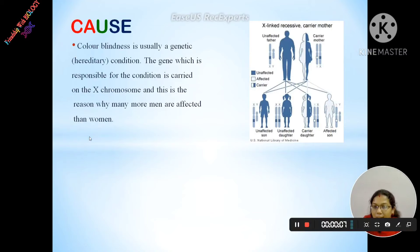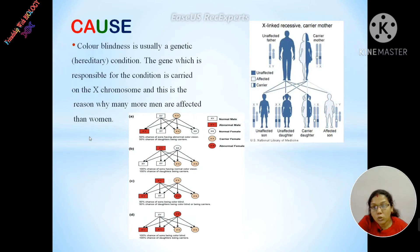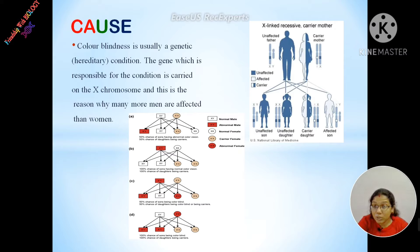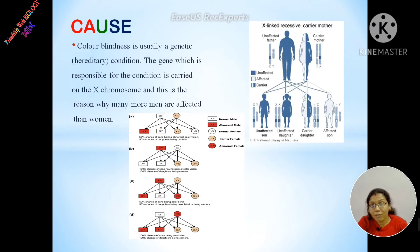What are the causes of color blindness? Color blindness is usually a genetic condition. The gene responsible for color blindness is present on the X chromosome. Males have only one X chromosome, so if that X chromosome is affected, the male will be affected. In the case of females, there are two X chromosomes — if one X chromosome is affected and the other is not, the female may not be affected. That is why more men are affected than women.